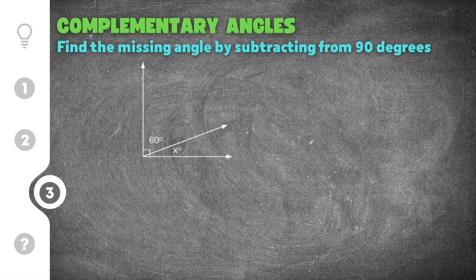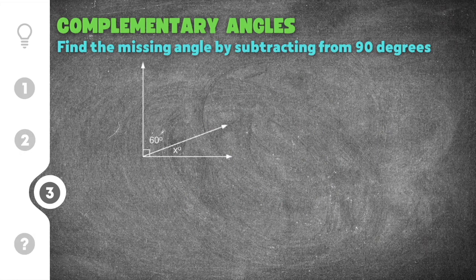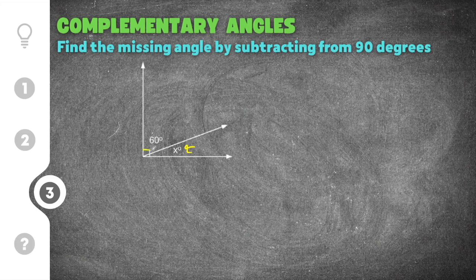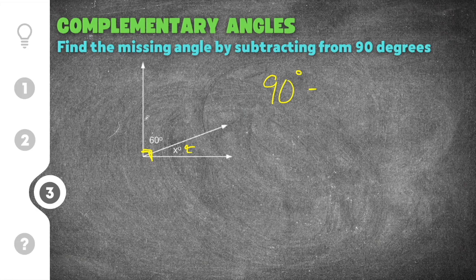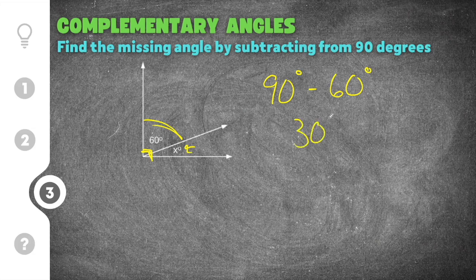And finally, our last practice problem. This time we have an angle of 60 degrees that we know and an angle of x that we don't know. We know they add up to 90, so we can say 90 degrees minus the angle we know, or this part that we know, which is 60, and that will give us 30, which is going to be the part here that we do not know. So that's going to be 30 degrees.